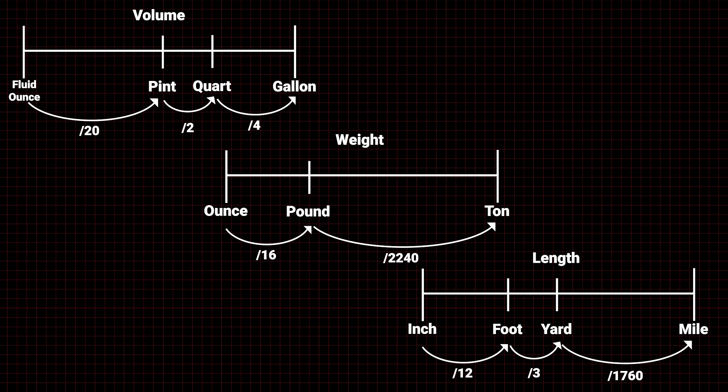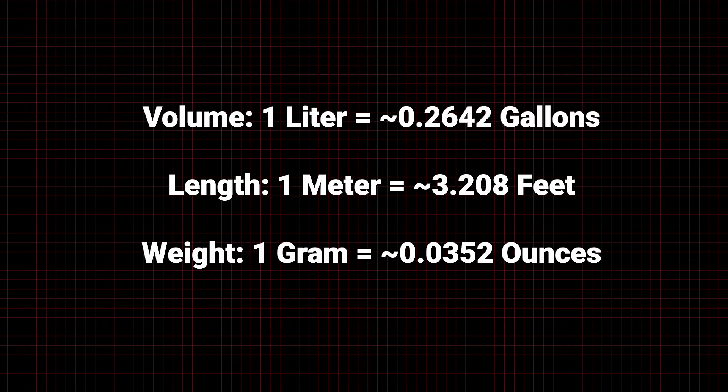Now for the imperial system, this is where things get dicey, and it only gets worse when converting across systems. For example, to go from meters to feet, you would need to multiply your measurement by 3.208.